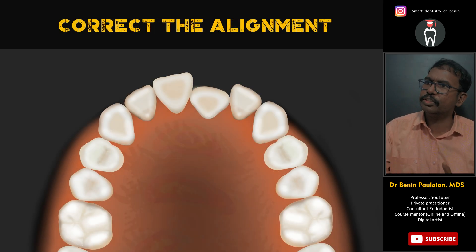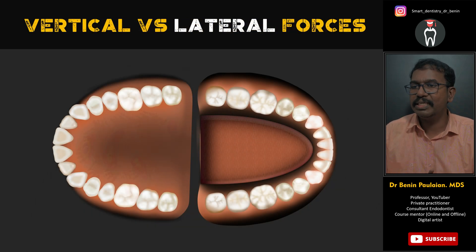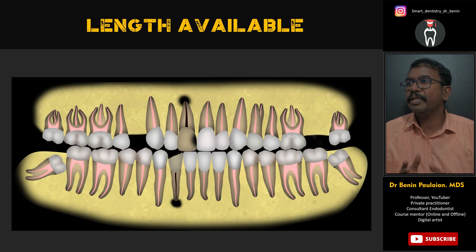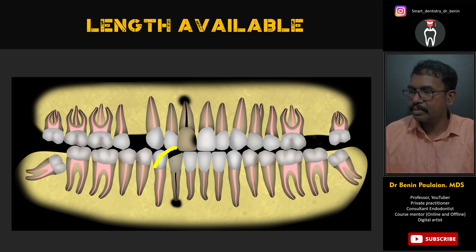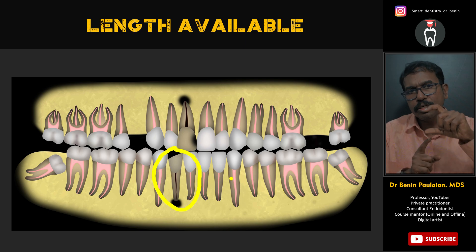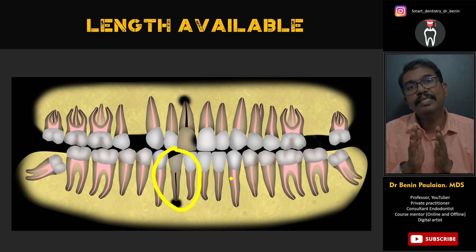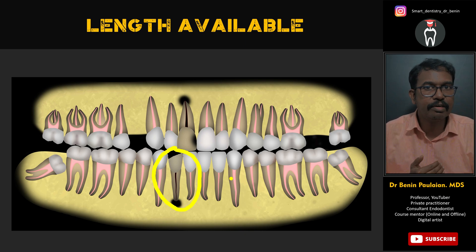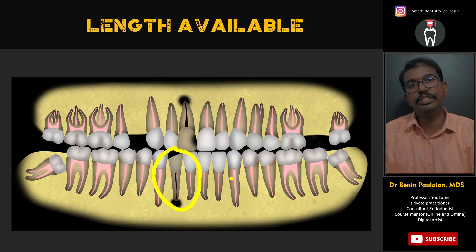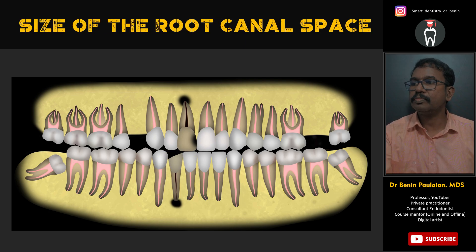To summarize alignment and force considerations: when changing alignment, always go for ribbon type post. For anterior teeth with lateral forces, go for a prefabricated fiber post or ribbon type post. For a narrow and shorter tooth like a mandibular lateral incisor or central incisor, a smaller prefabricated metal post may be preferred — over-preparing a wide post space in these teeth can lead to strip perforation. So even in anterior teeth, a prefabricated metal post is sometimes appropriate.